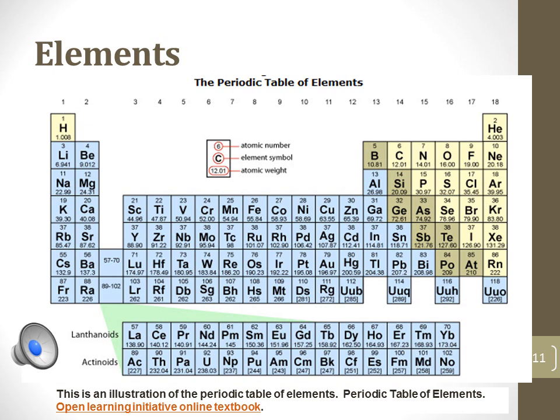The second group is the alkaline earth metals. Their ions similarly carry a positive two charge. Two other important groups are the seventh and eighth groups, the halogens and noble gases, respectively.